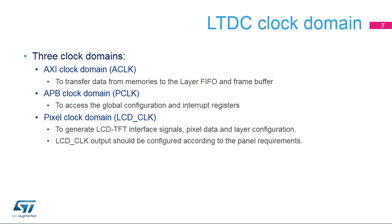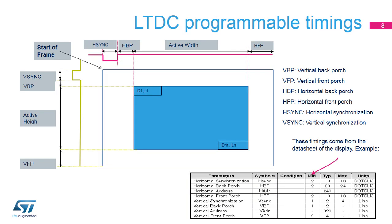The LCD-CLK output should be configured according to the panel requirements. To interface with TFT panels, all timings are programmable through the LTDC controller. These timings come from the TFT panel data sheet and are: VBP (Vertical Back Porch), VFP (Vertical Front Porch), HBP (Horizontal Back Porch), HFP (Horizontal Front Porch), H-Sync (Horizontal Synchronization), and V-Sync (Vertical Synchronization).